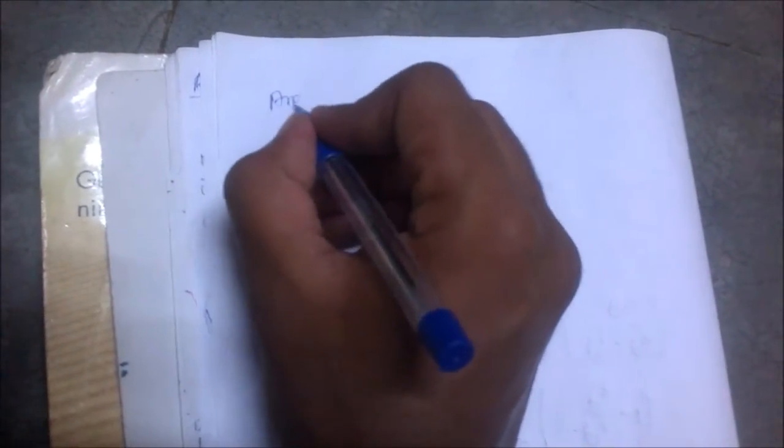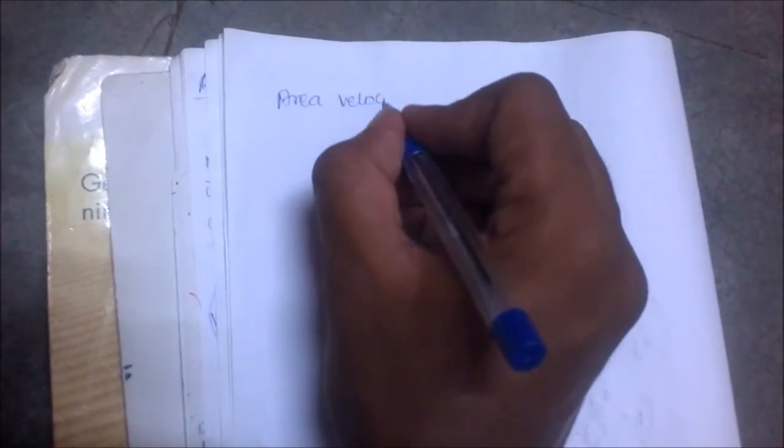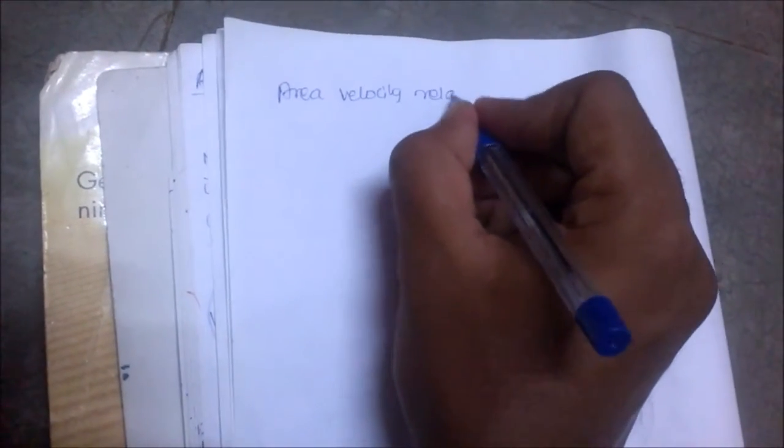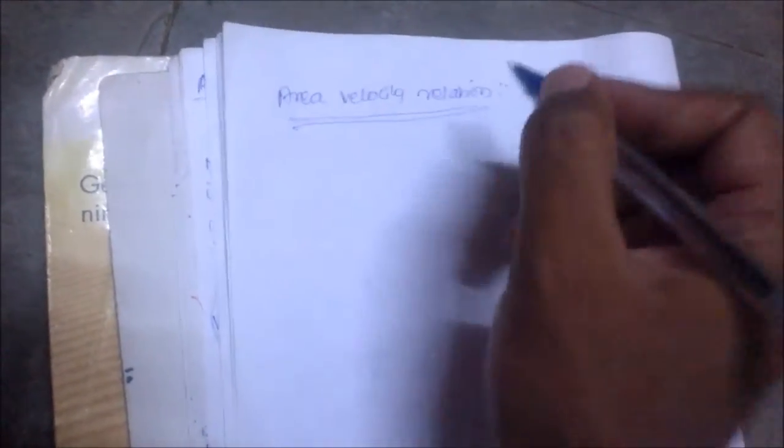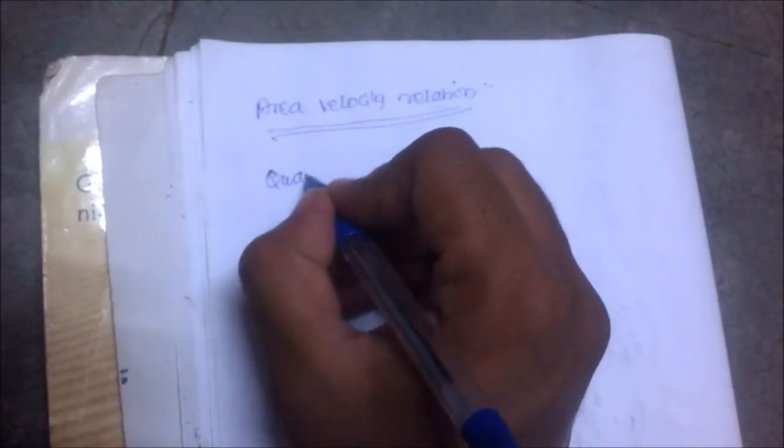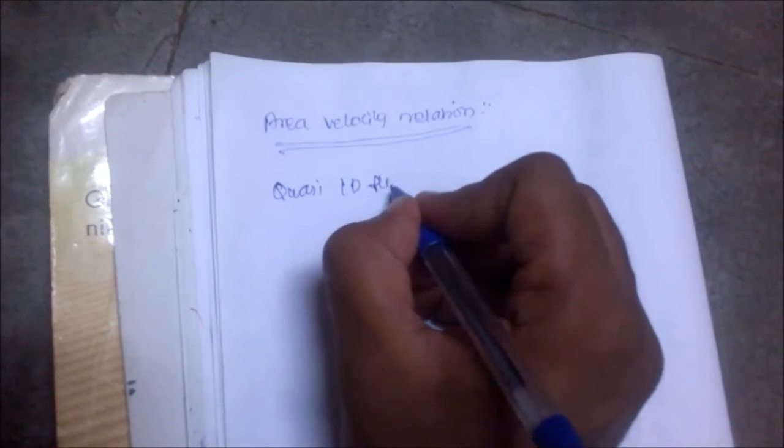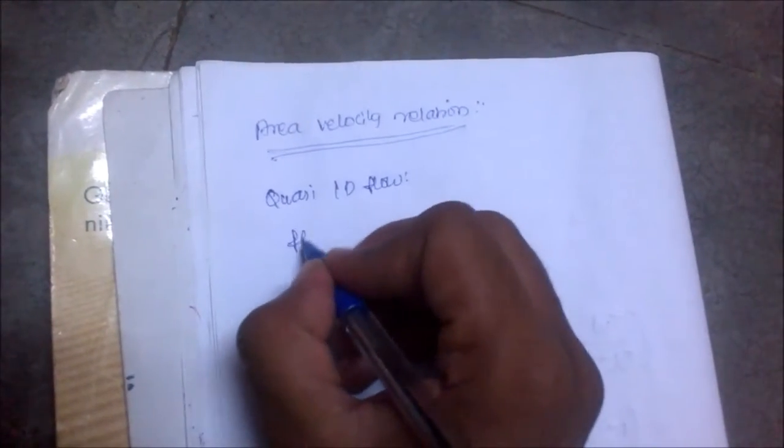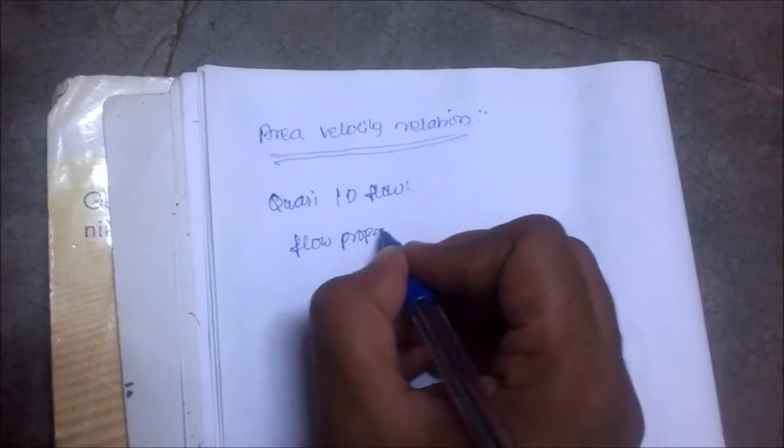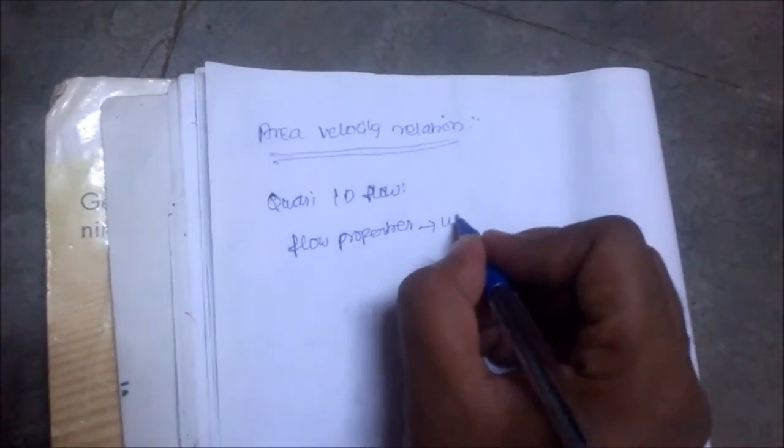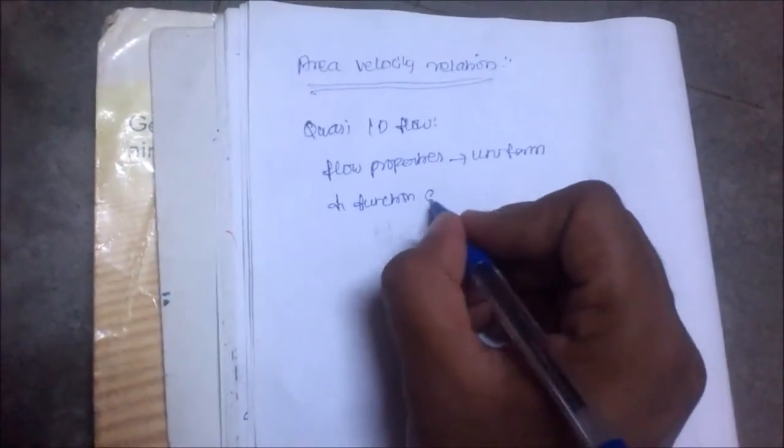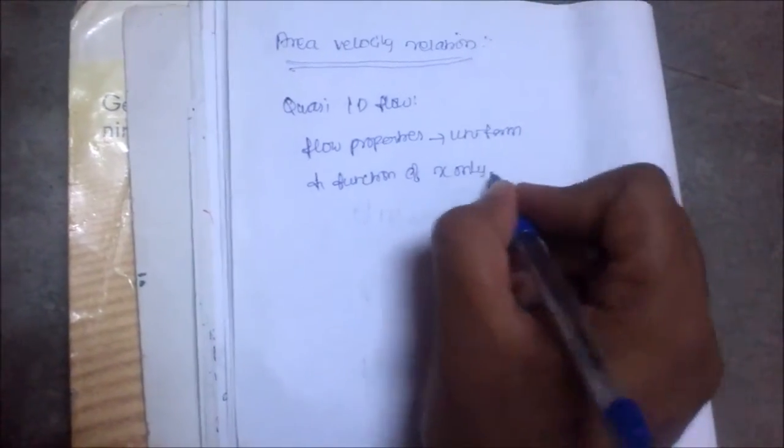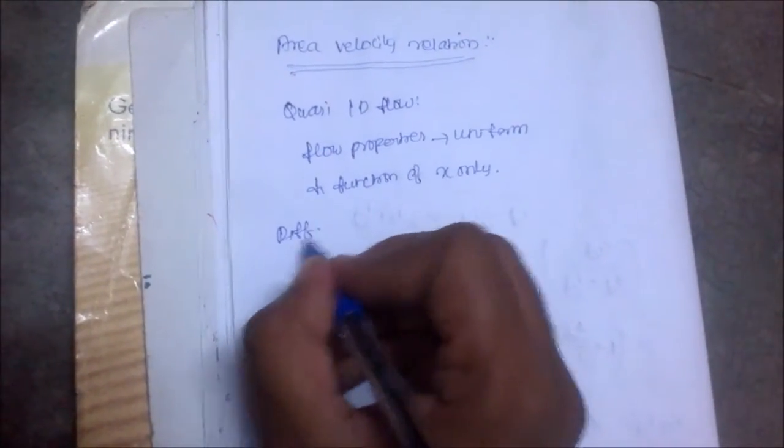Let us derive the area-velocity relation for quasi one-dimensional flow. In quasi one-dimensional flow, the flow properties are uniform throughout any given cross-section and are functions of x only. Let us take the differential form of the conservation equation.